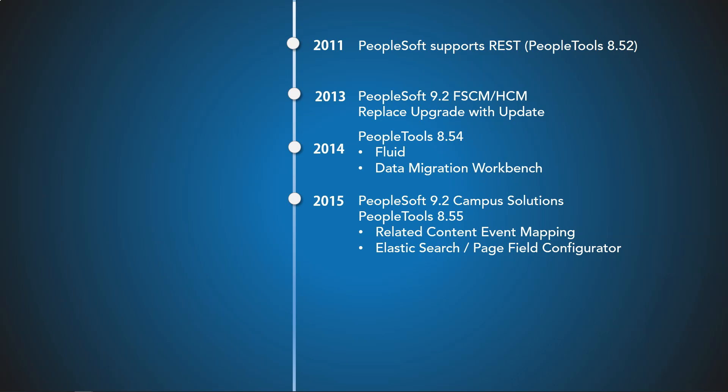During the same timeframe, a feature called Related Content Event Mapping was released to inject PeopleCode customizations using a new framework without touching the delivered code — basically eliminating the need to retrofit code after each upgrade, which is a big cost saver. PeopleSoft also partnered with the open-source Elasticsearch engine to improve searching data inside the PeopleSoft application. Another feature, Page Field Configurator, allows adding custom validations on a PeopleSoft page without logging into App Designer, with just a couple of clicks and no need to migrate objects.